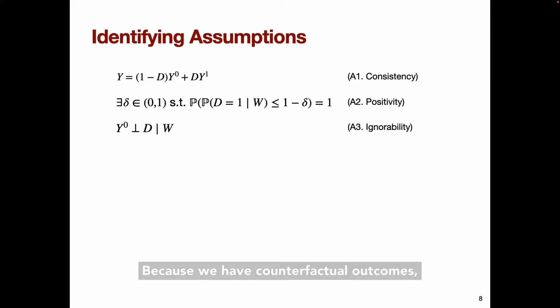Because we have counterfactual outcomes, we require a set of identifying assumptions to equate causal parameters to the observed data distribution. We make a fairly standard set of three identifying assumptions. I won't go into the details here, but you can see the paper for some intuition about what these mean and what you can do if they don't quite hold.